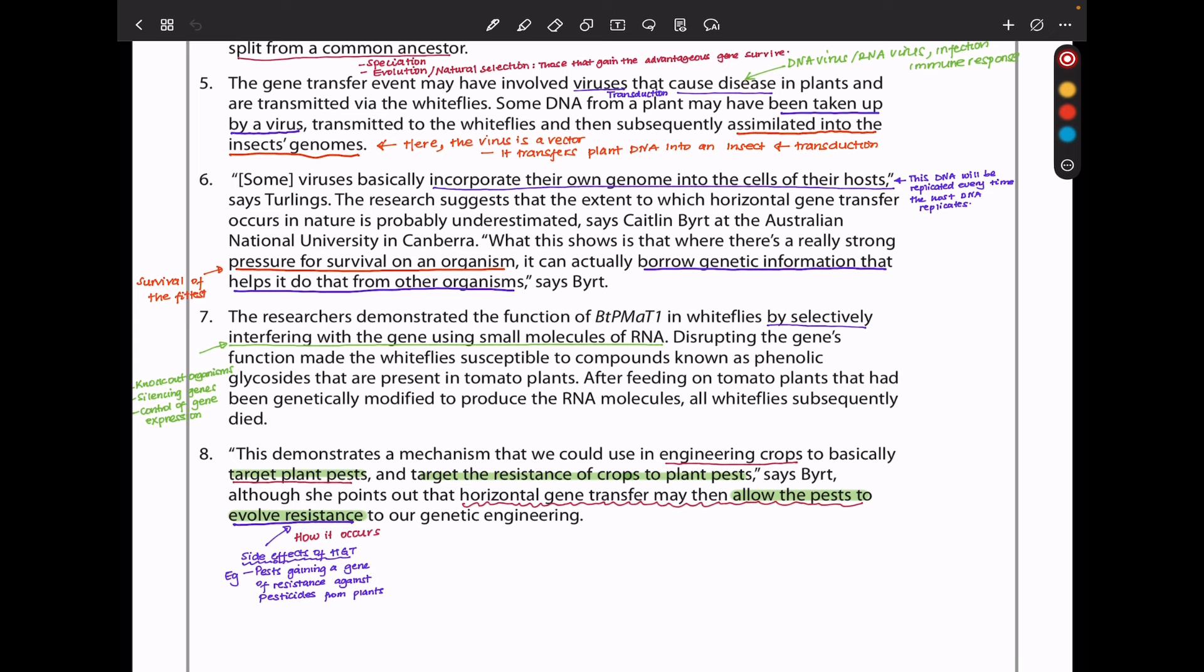The researchers demonstrated the function of BtPMaT1 in whiteflies by selectively interfering with a gene using small molecules of RNA. Disrupting the gene's function made the whitefly susceptible to compounds known as phenolic glycosides that are present in tomato plants. After feeding on tomato plants that had been genetically modified to produce the RNA molecules, all whiteflies subsequently died. This demonstrates a mechanism that we could use in engineering crops to basically target plant pests and target the resistance of crops to plant pests, says Byrt, although she points out that horizontal gene transfer may then allow the pests to evolve resistance to our genetic engineering.